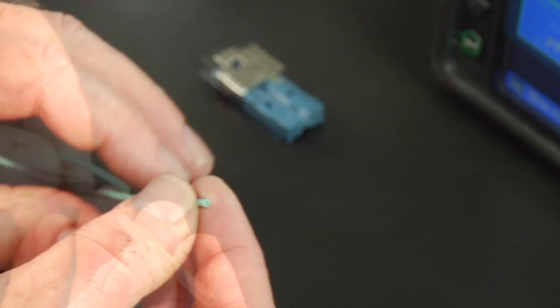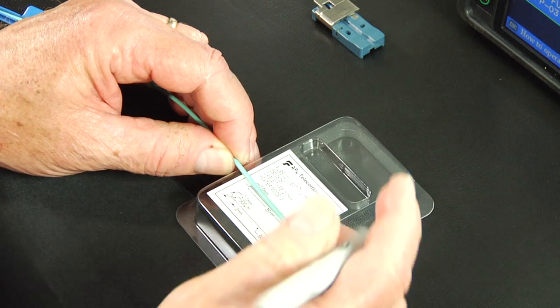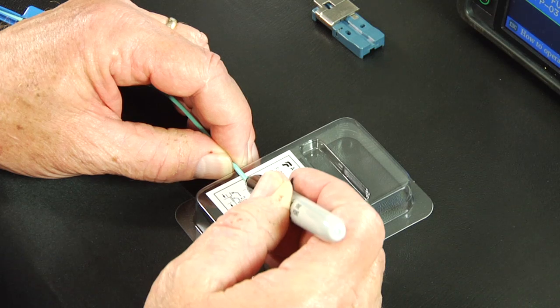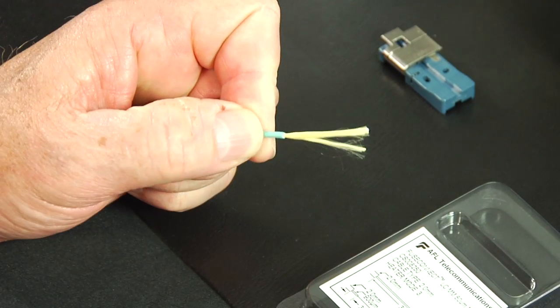Slide 2 millimeter boot and protective sleeve onto the fiber. Refer to the strip template on the package cover and mark the 2 millimeter cable at 35 millimeters from the end of the cable. Strip 35 millimeters of cable jacket.